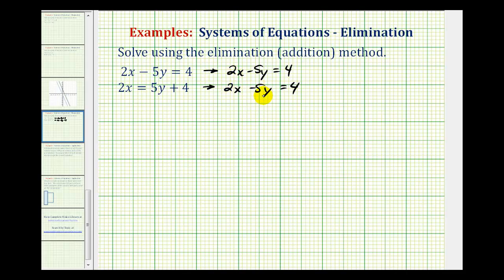So if we want them to be opposites, we have to multiply one of the equations by negative 1. Let's just go ahead and multiply the first equation by negative 1 and then see what happens. We'll leave the second equation the same.